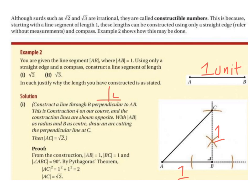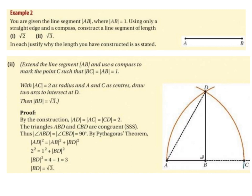We were asked to construct a line segment of length root 2 and justify why that length is correct. Here is our construction and here is our proof. Next is root 3. Again, we start with the line segment AB, which is 1 unit.